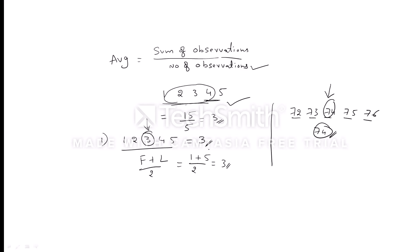Remember: when a given series is in consecutive order, average can be calculated directly by either considering the middle term, or by using first number plus last number divided by 2. This is for consecutive numbers.